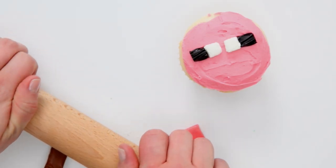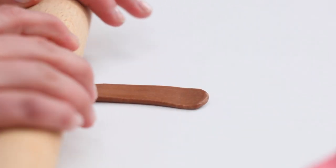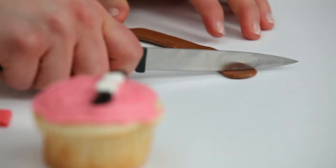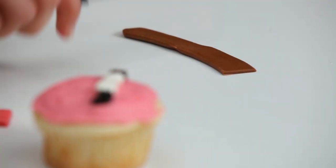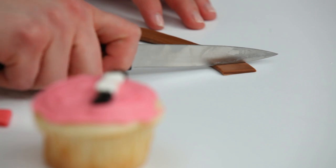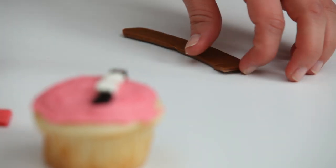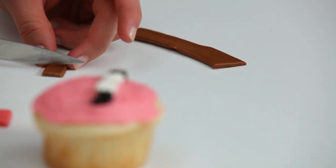Next, roll out a chocolate tootsie roll and cut out two small squares to make the nostrils. Use a really sharp, clean knife to keep the tootsie rolls from sticking. If the candies start sticking to the knife, you can spray the knife with cooking spray.